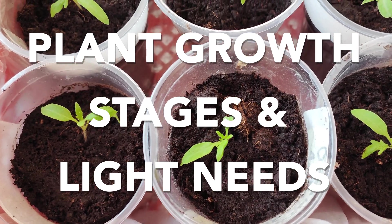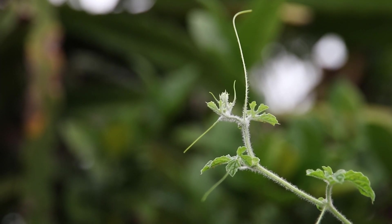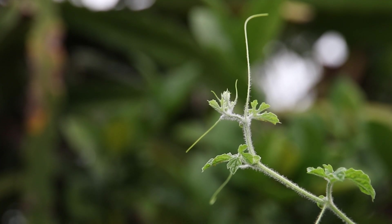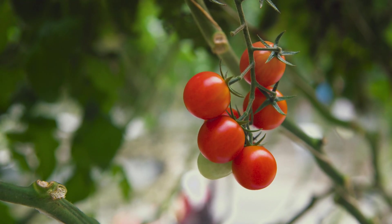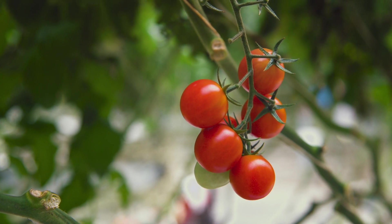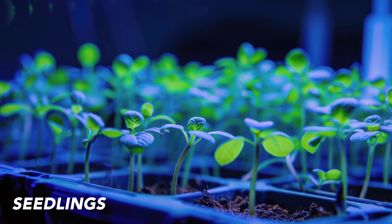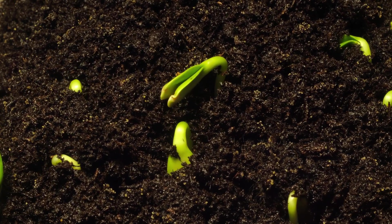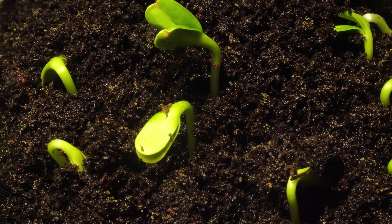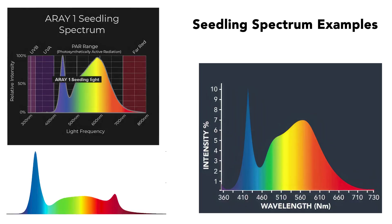Understanding the light needs of plants at various growth stages is crucial for optimizing their development. Different wavelengths of light play specific roles during each phase of growth. Keep in mind that there is some wiggle room with the proportions of wavelengths, so I'll be speaking in generalities here. During the seedling stage, plants benefit most from blue light, with a small amount of red light. Blue light supports strong root development and prevents seedlings from becoming leggy, ensuring they grow into sturdy plants. The addition of some red light helps initiate early growth processes.